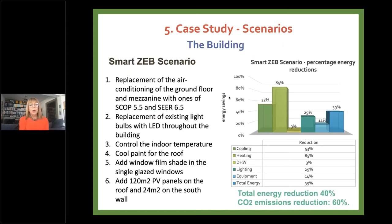At the building level, we replaced all air conditioning on the ground and mezzanine floors with higher-quality systems with better seasonal coefficient of performance and seasonal energy efficiency rates. We replaced all existing light bulbs with LED throughout the building, introduced temperature management control systems, applied cool paint on the roof, added a window film shade on all single-glazed windows — which proved very effective — and added 120 square meters of PV on the roof and 224 square meters on the south wall. These measures achieved a 40 percent reduction in energy and a 60 percent reduction in CO2 emissions.